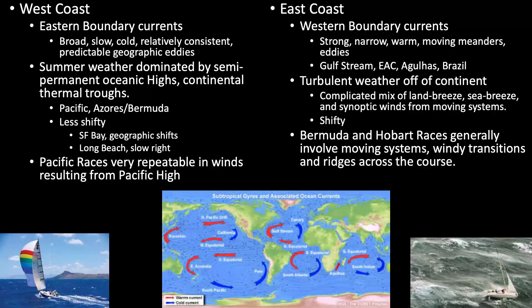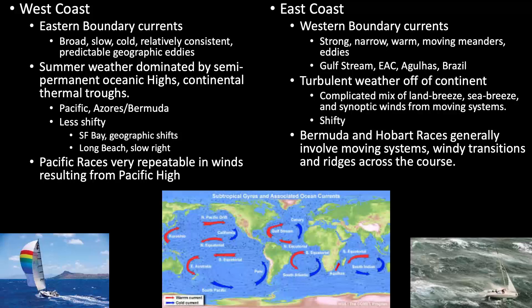On the west coast, summertime weather is dominated by semi-permanent oceanic highs. In the Pacific, there's a boundary between that and a continental thermal trough, causing windy northwesterlies along the shore — fairly stable. In San Francisco Bay, the wind comes in through the gate like molasses and oozes around bits of land. There are dramatic geographic shifts, but they're extremely repeatable. On the east coast of continents, you have much more turbulent weather — a more complicated mix of land breeze, sea breeze, and synoptic winds from moving systems.